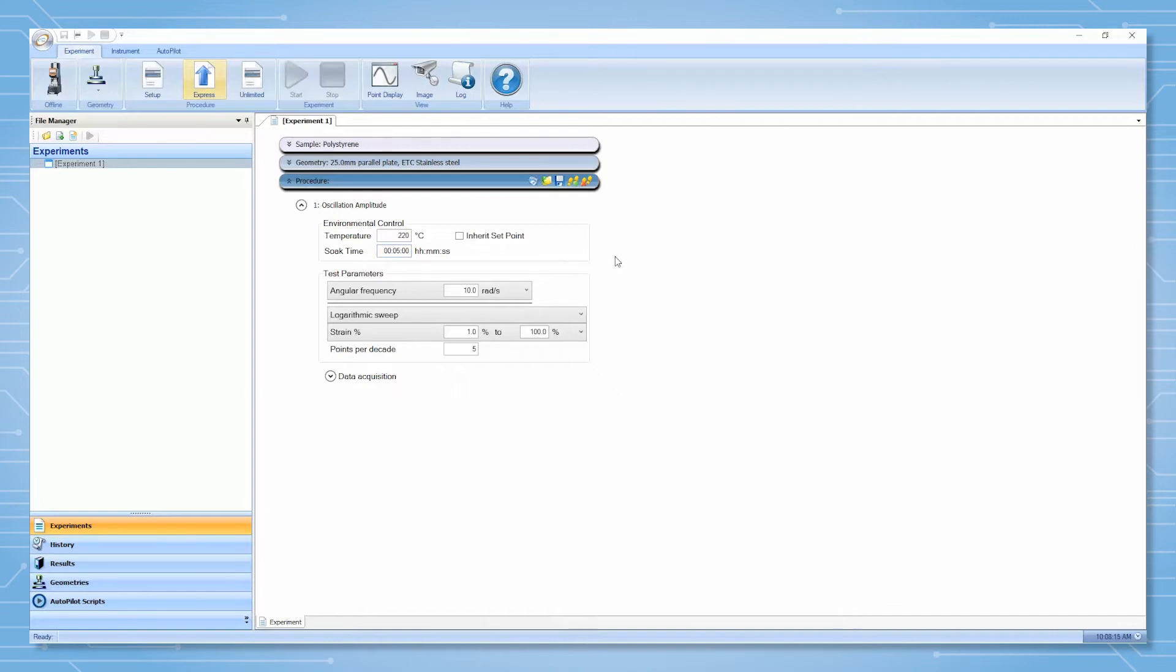The linear region often increases with temperature and decreases with frequency, particularly for polymer-like systems. It is advised that the linear region be determined near the lowest temperature and highest frequency that the material would be tested at.